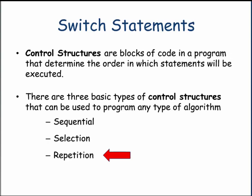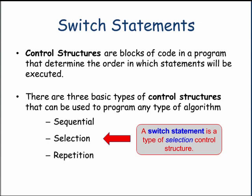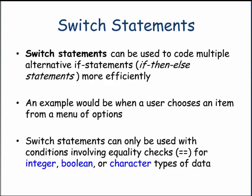Of the three types of control structures, switch statements are a type of selection control structure. Switch statements can be used to simplify the coding of conditions with a number of possibilities — an example might be a menu of choices for a user to pick from. Keep in mind, though, that switch statements can only be used for equality checks with certain data types: integer, boolean, or character. They cannot be used for expressions checking a range of values or for floating point values.